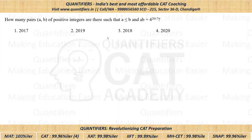Okay students, now let us discuss this question. So the question here is that A and B are positive integers. It is also given that A is less than or equal to B, and it is given that A into B — their product — is equal to 4 to the power 2017.